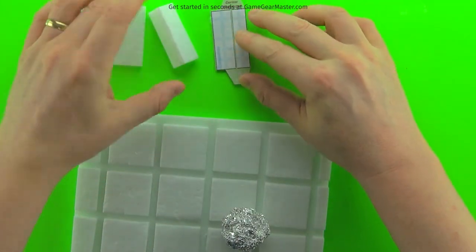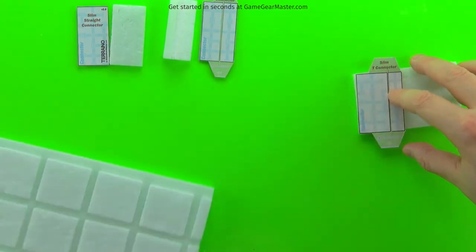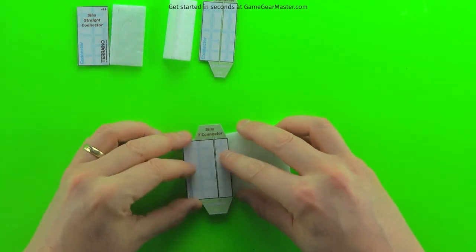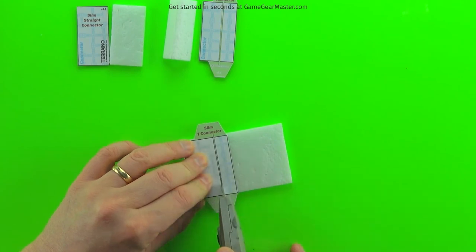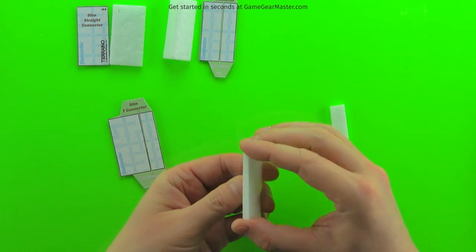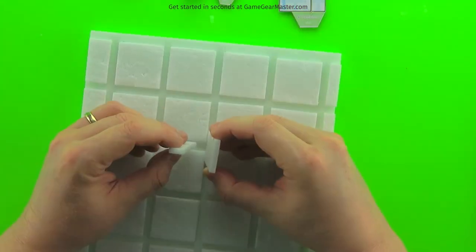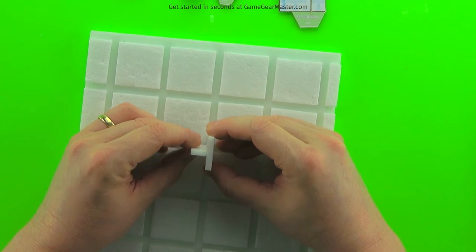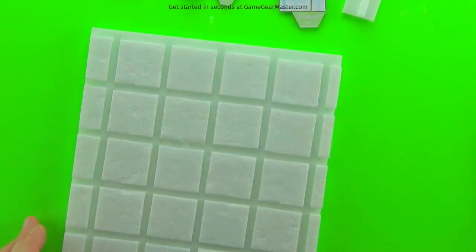Last but not least is the slim T-connector, which is also just two pieces of foam glued together like a T. Just make sure that the texturing is on the outside of the T. And that does it for all the connectors.